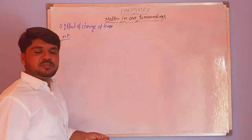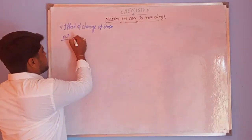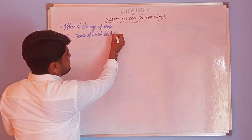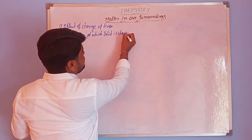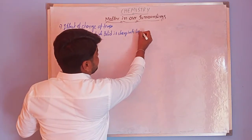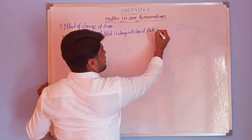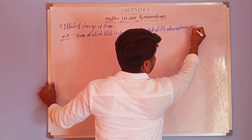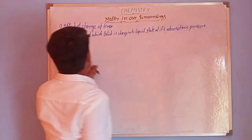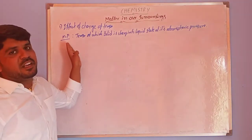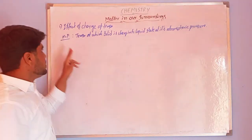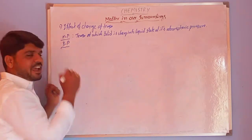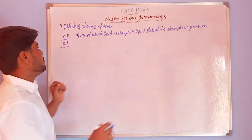So we saw the melting point. Melting point is the temperature at which a solid changes into a liquid state at its atmospheric pressure. Solids have melting points.